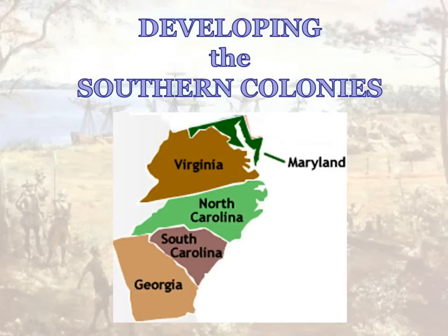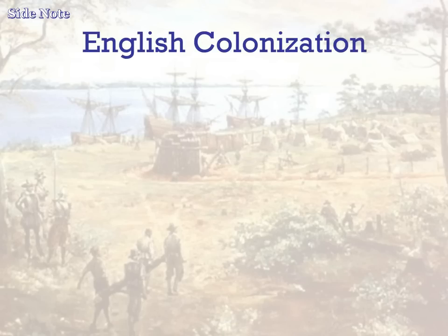Ladies and gentlemen, welcome to the developing process of the 13 English Colonies. Today we're going to start out with the Southern Colonies, then progress into the New England Colonies, and then the Middle Colonies. On the back side of your worksheet, we're going to start out with some side notes — you're going to be copying down some notes from the lecture, and they are called side notes.